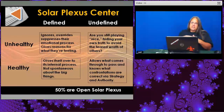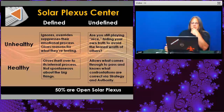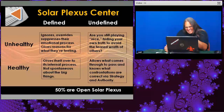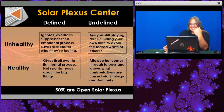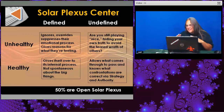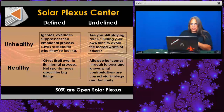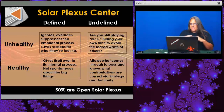If those people don't like the fact that you're emotional, they can go away — they weren't for you anyway. The healthy defined solar plexus gives itself over to its own internal process, not being spontaneous about the big things, going slow, taking your time. Living an emotionally-based life would be an amazing thing. The non-emotional people don't know what's going on in the now — it's a spooky life. But emotional people move slow and turn slow; once your direction is there you can pour on the juice, but in the decision-making process you take your time. The healthy undefined: are you still trying to play nice, hiding your own truth to avoid the feared wrath? That's a good one.